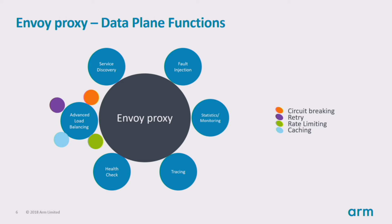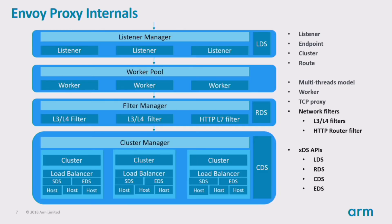For microservices, good observability is needed. Envoy supports strong statistical support on all subsystems together with distributed tracing. Basically, what a proxy does is forward requests to the target. There are four core concepts in this process in Envoy: listener, endpoint, cluster, and route.